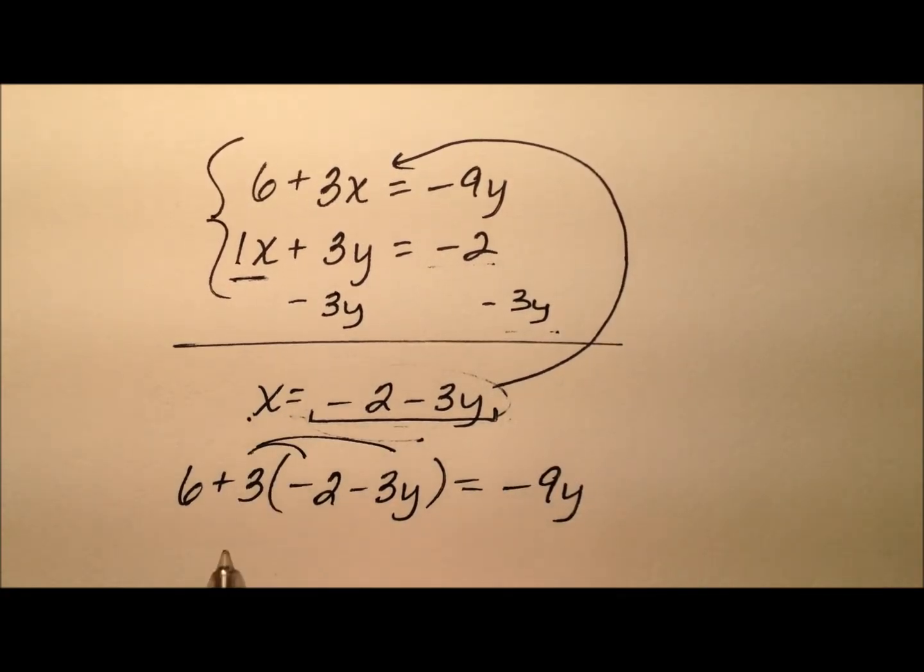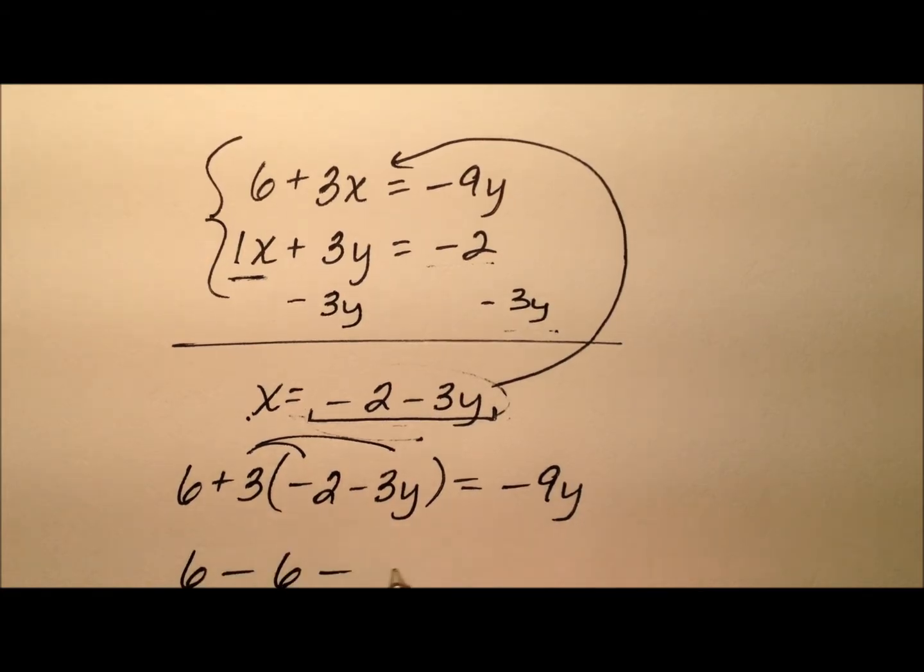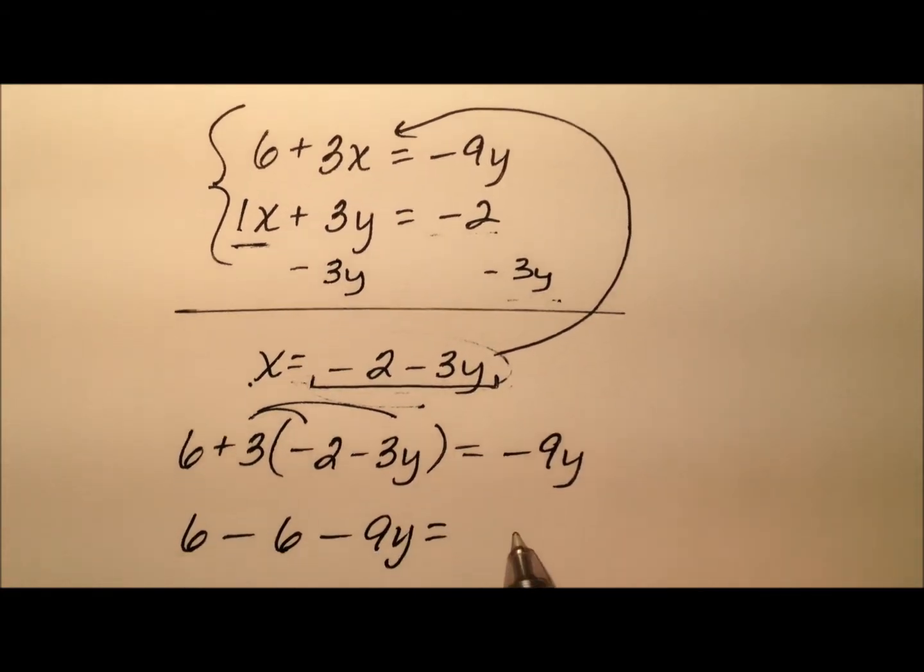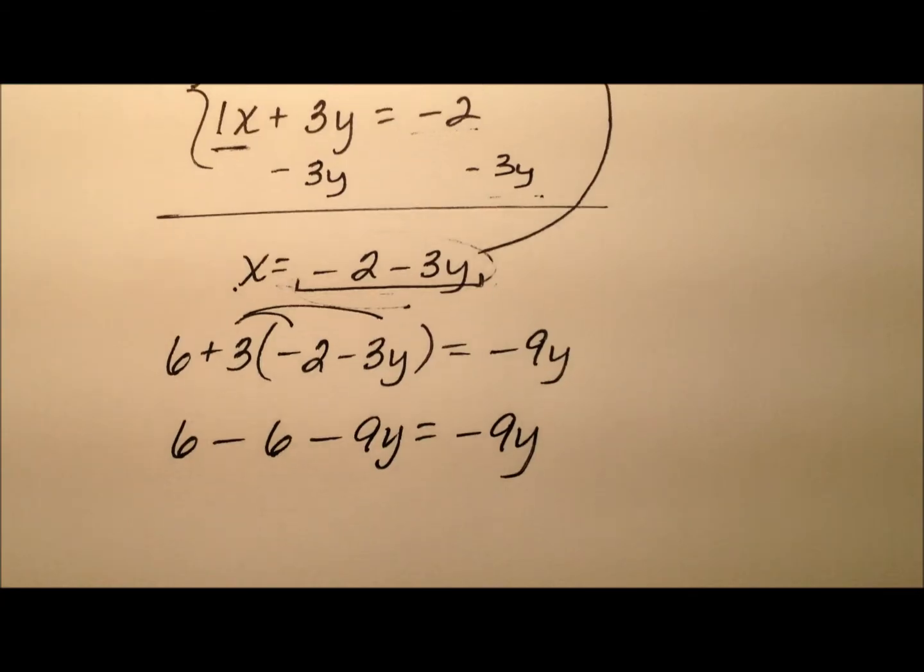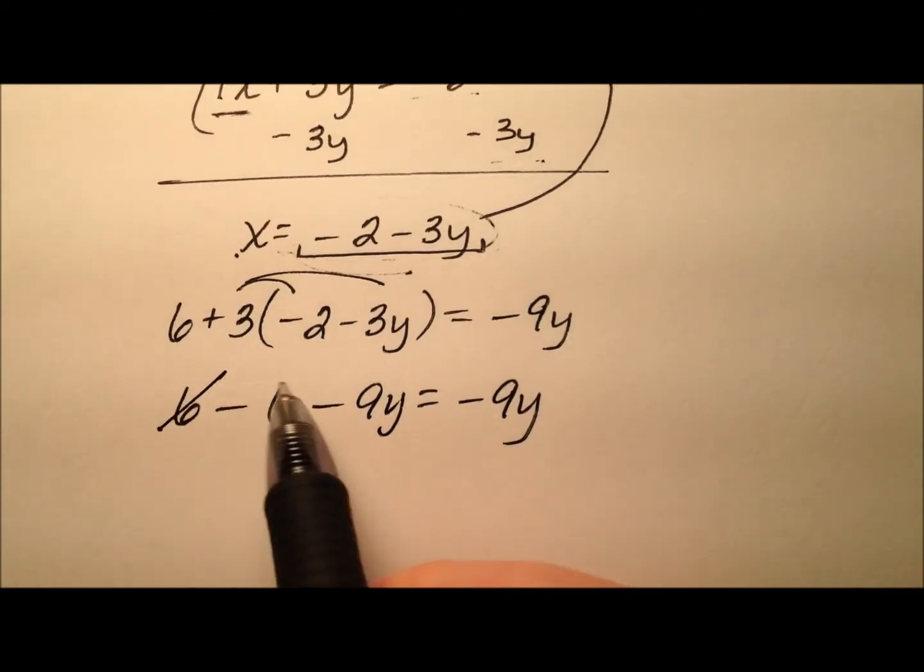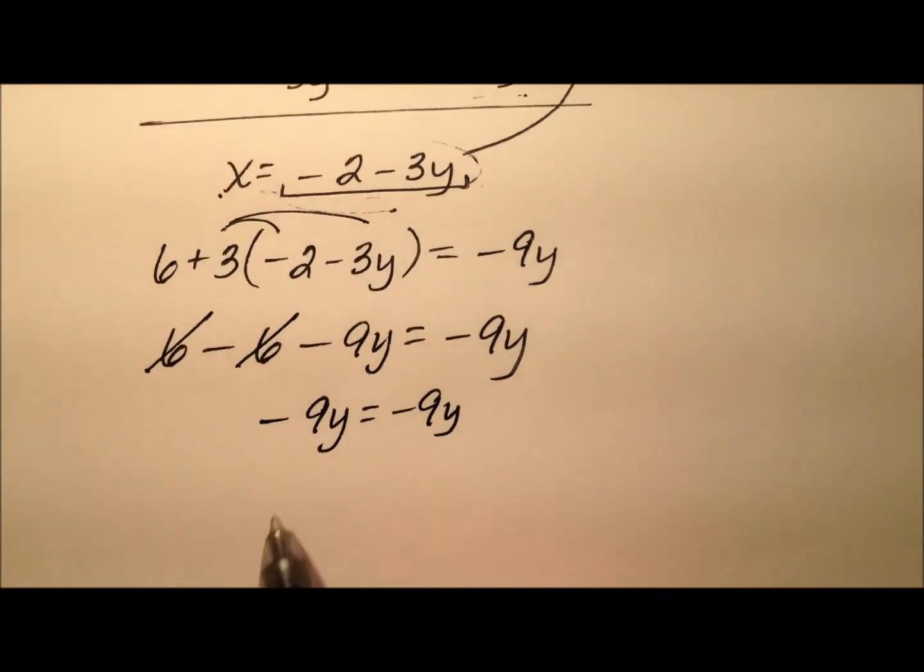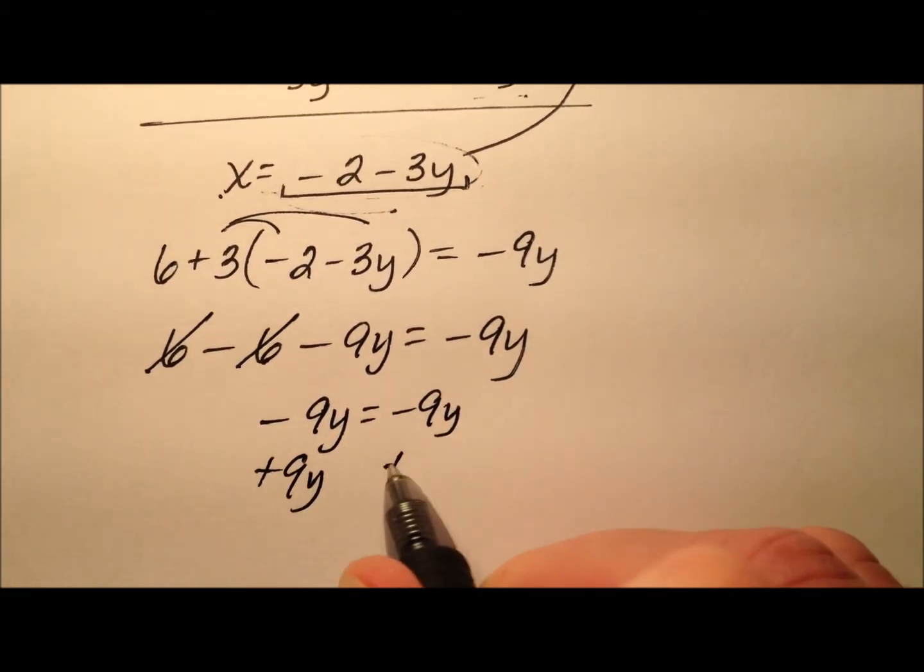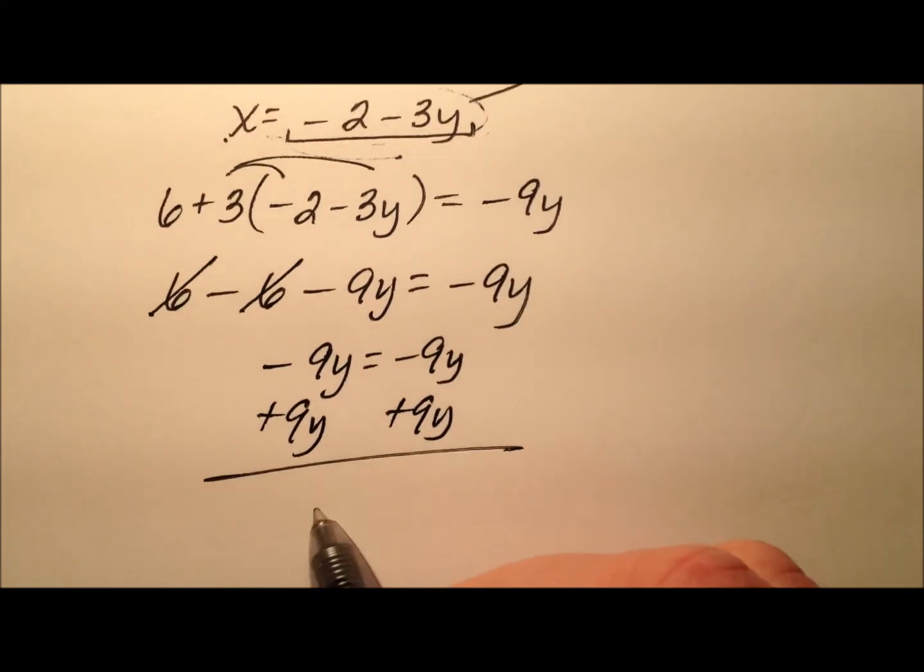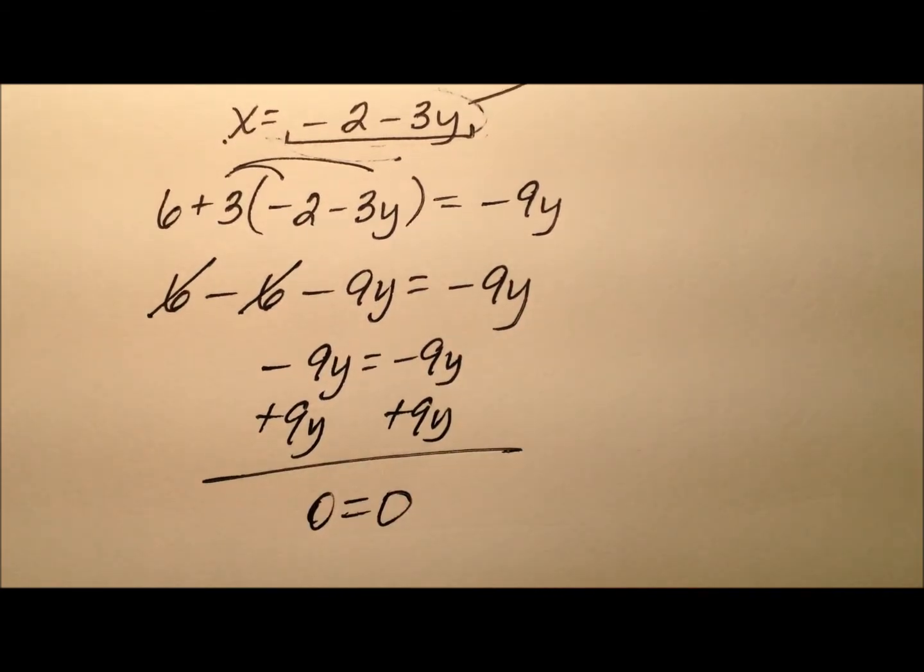So I'm going to go ahead and distribute here. So 6 minus 6 minus 9y equals negative 9y. Well, our 6s cancel. We have negative 9y equals negative 9y. So if we were to add 9y to both sides, we have 0 equals 0.